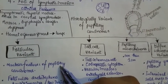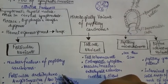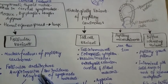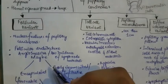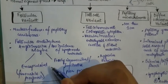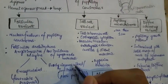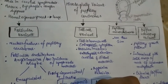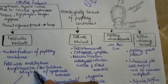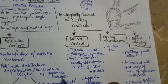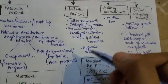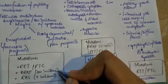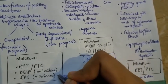In the follicular variant, the nuclear features of papillary carcinoma are present, but the architecture resembles follicular masses. It has angio-invasive spread and may be encapsulated, giving a favorable prognosis; if poorly circumscribed or infiltrative, it has a poor prognosis. It shows hematogenous spread but low incidence of lymph node metastasis. Mutations involved include RET/PTC and BRAF at low incidence, while RAS has increased incidence.